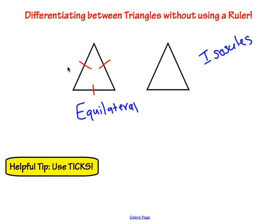If I add another tick to one side, the triangle is no longer equilateral because one side has more ticks than the others. To make it equilateral again, I even out the number of ticks. For isosceles, we just want two sides the same, so I put two ticks on this side and two ticks on this side. To make the third side different, we put just one tick — or three ticks — showing these two are the same but this one is different.